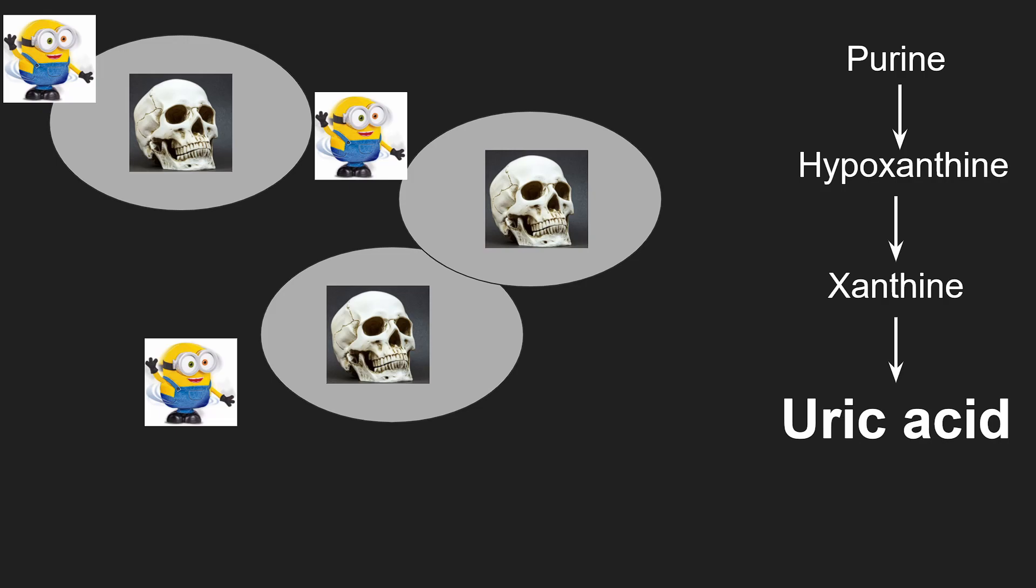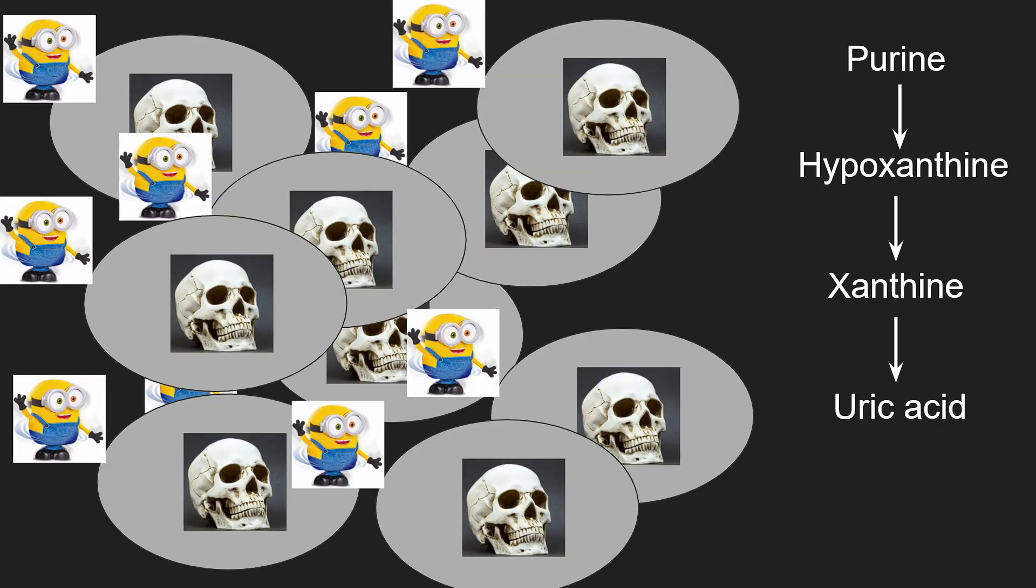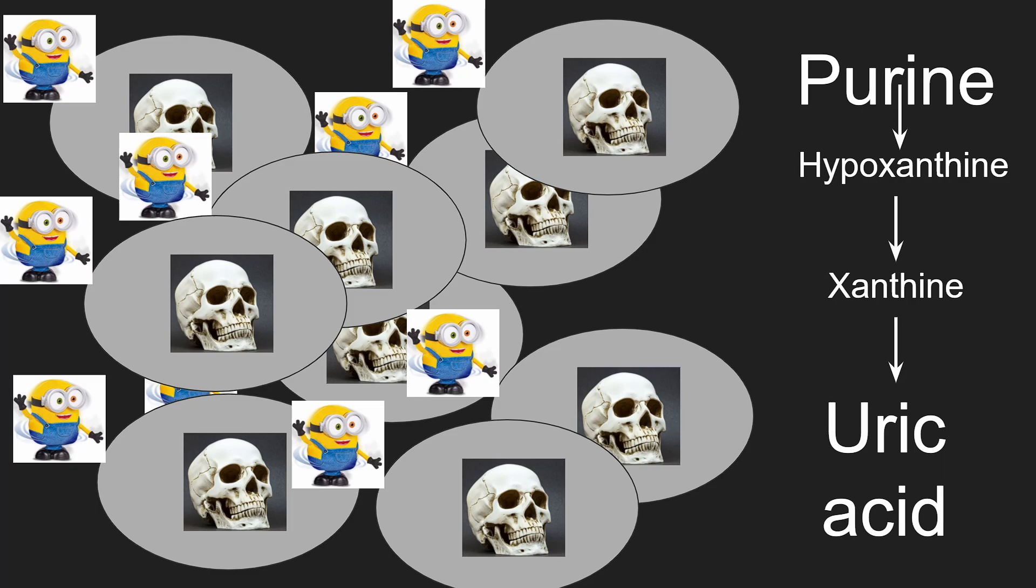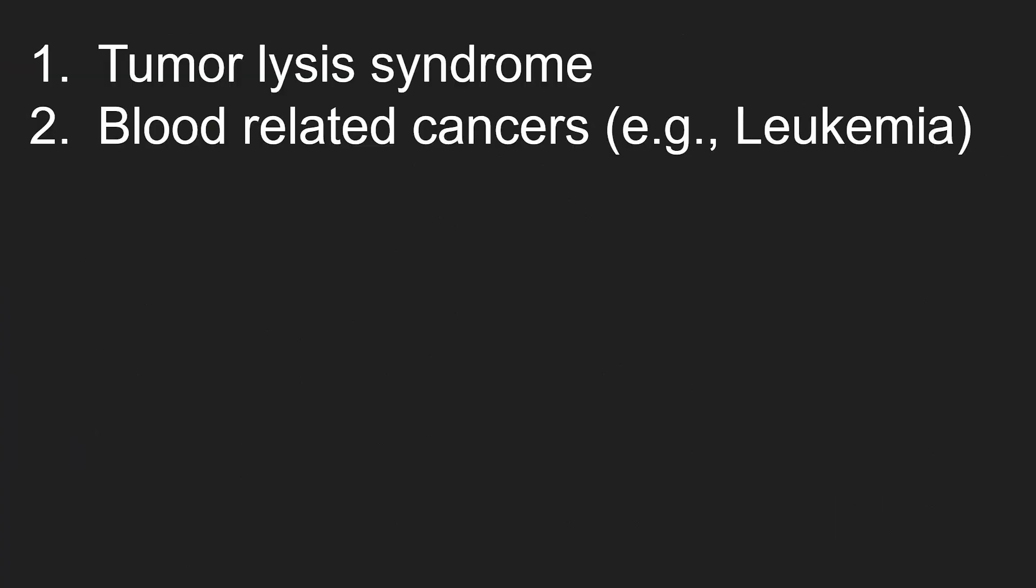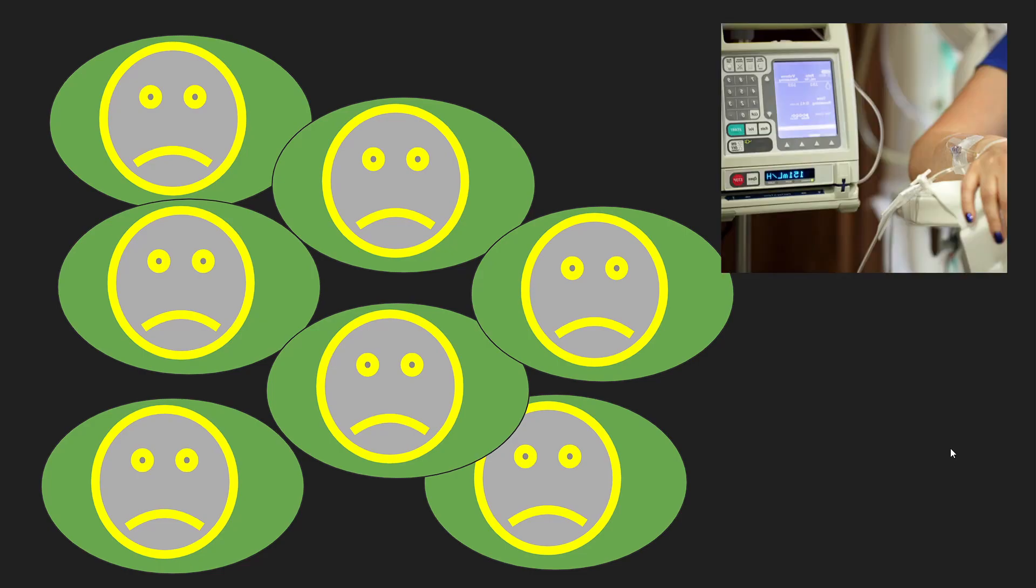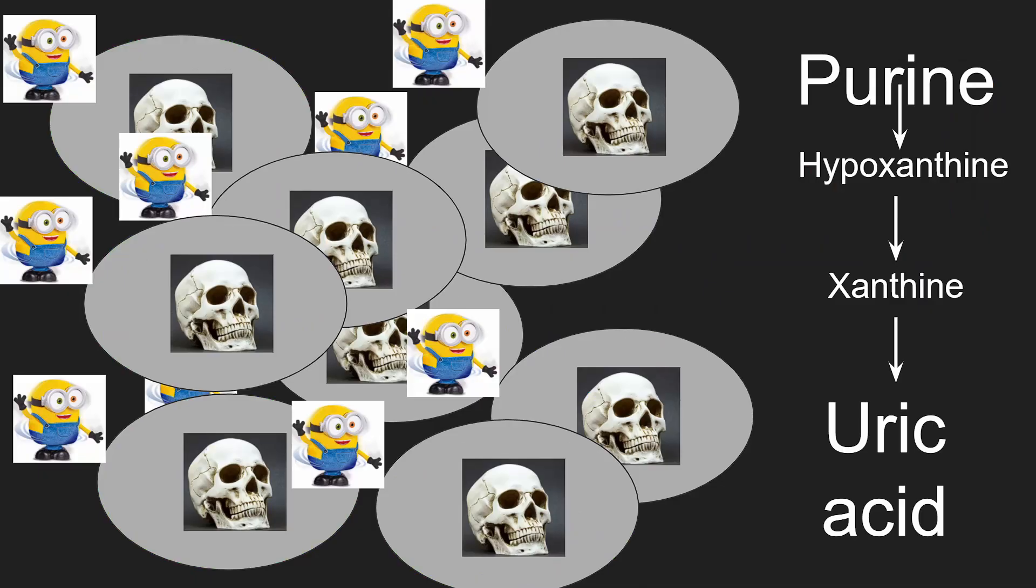If we think about this concept, if there is a situation where many cells start dying, that will result in a lot more purine being released. And in turn, that will result in a lot more uric acid. Diseases that involve this concept are tumor lysis syndrome and blood related cancers such as leukemia. The idea is that with cancer, the cells in the body are multiplying uncontrollably. We usually treat cancer by killing the many cancer cells with chemo and radiation. As a result, the body can end up with an overabundance of uric acid.